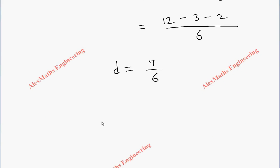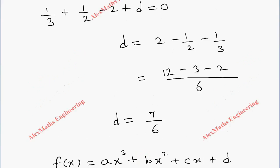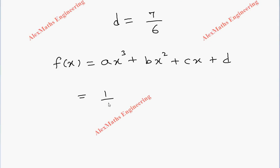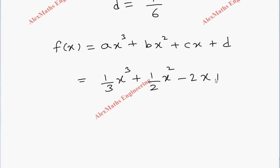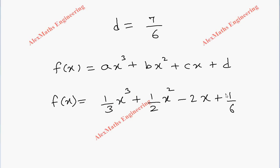So all these values should be substituted into the original function f(x), which is ax³ plus bx² plus cx plus d. So 1/3 x³ plus 1/2 x², the value of c is minus 2, so minus 2x and d is 7/6. This is our original function f(x). So we got the cubic function.